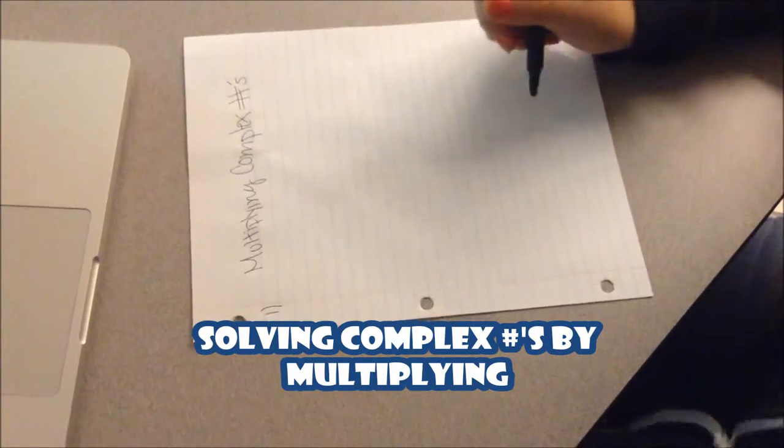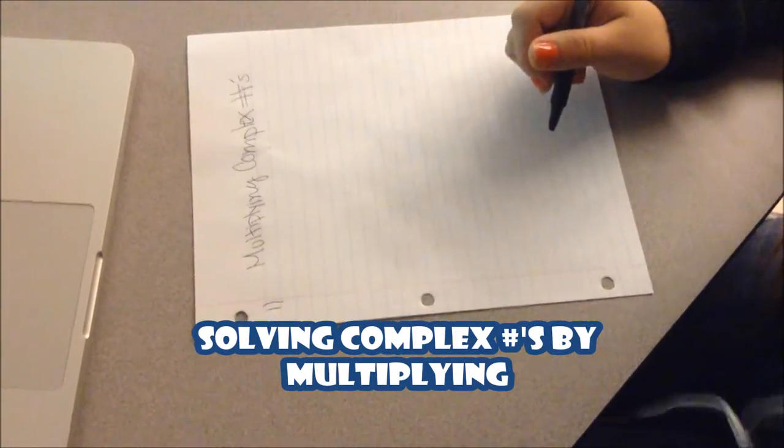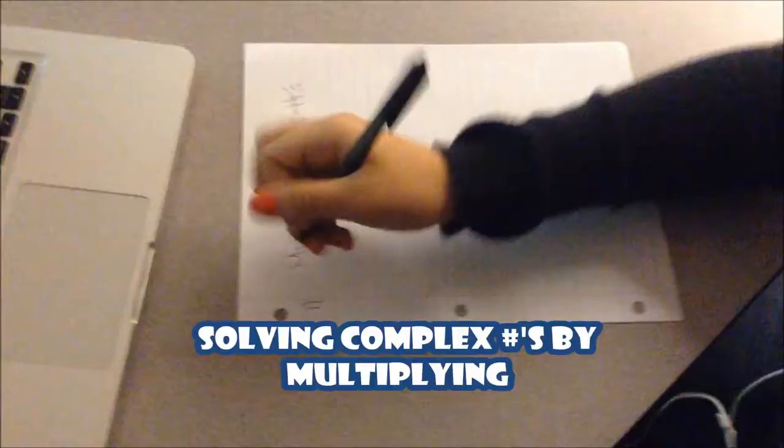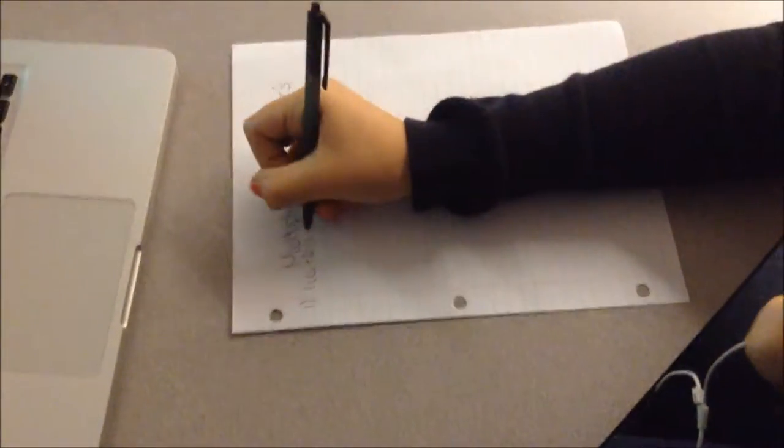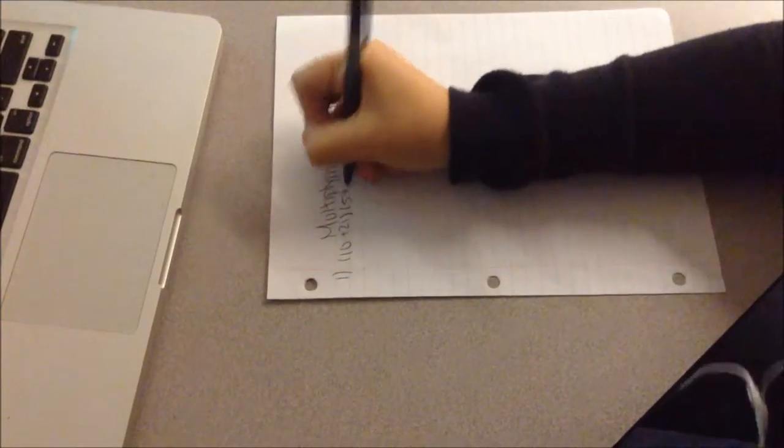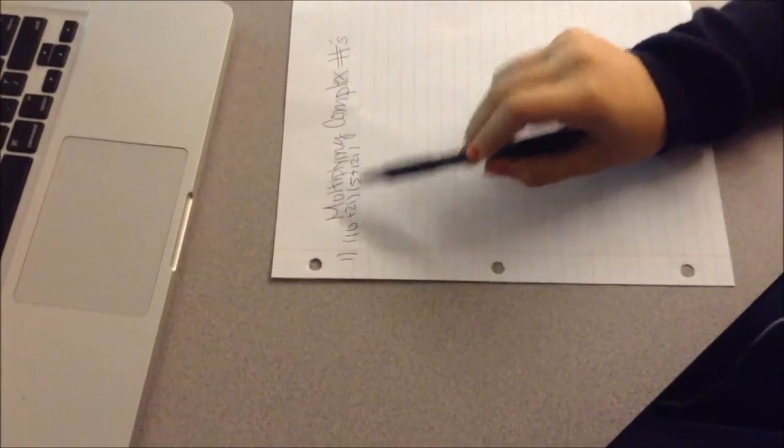I will now explain how to solve an expression of complex numbers being multiplied. So for example, 10 plus 2i multiplied by 5 plus 12i. Since you have two different kinds of numbers in parentheses, you are going to use what is called the FOIL method.